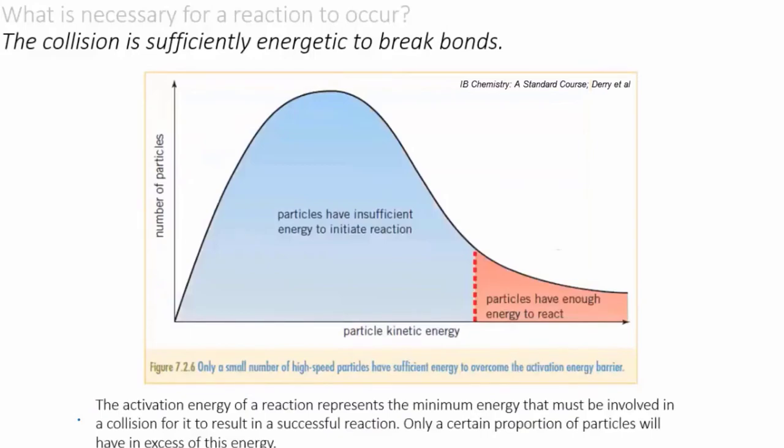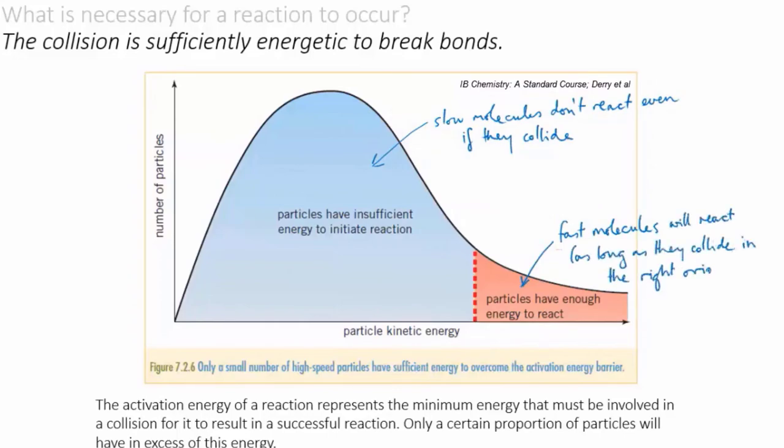So we can redraw the Maxwell-Boltzmann distribution to show that for some generic reaction a certain proportion of molecules will have enough energy to react while the rest will not. And the amount of energy that divides the haves from the have-nots, the minimum energy necessary for a collision to cause a reaction, that is the activation energy of that reaction.